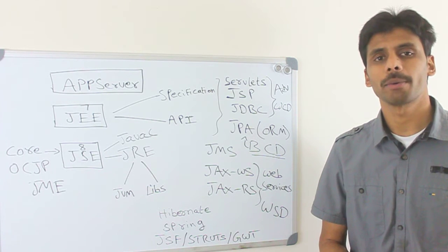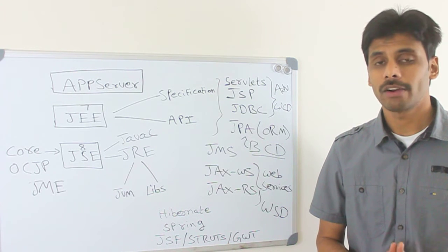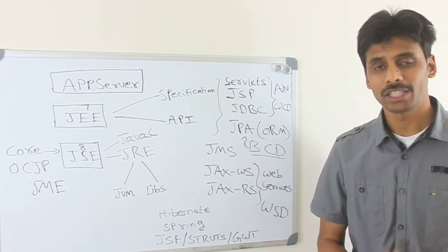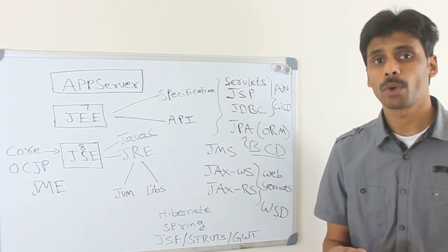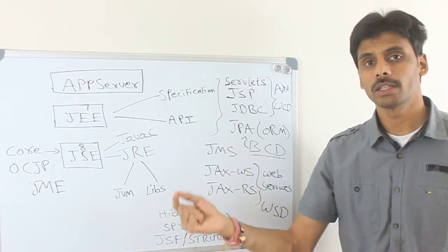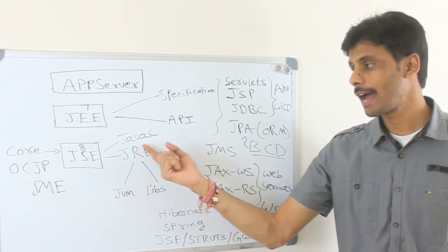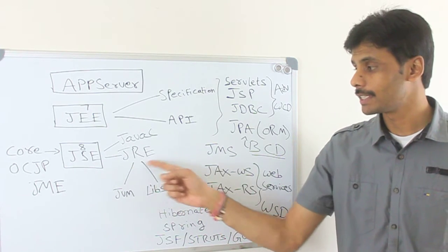So when you start writing your first Java program, the Hello World program, you will download the JDK, Java Developers Kit from Oracle. You will install it on your machine. Then you write your program, compile your program into bytecode using Java C. So when you download the Java Standard Edition or the JDK, you will have tools like Java C, which allows you to compile your programs, and then the JRE.